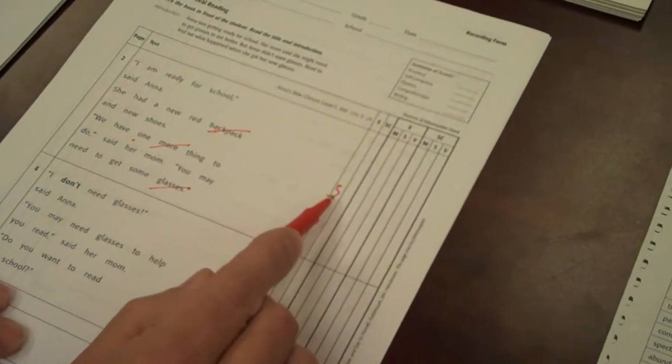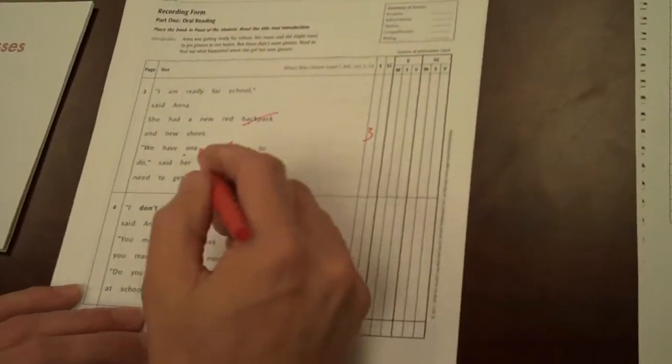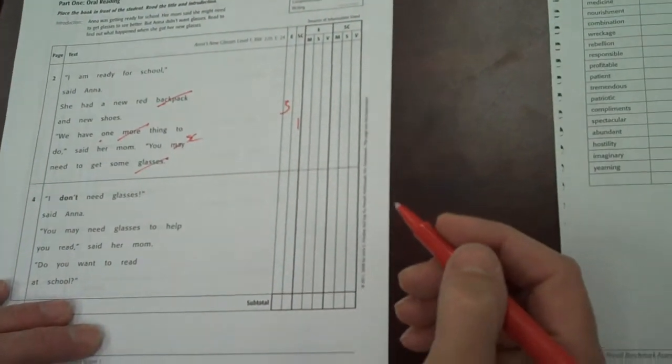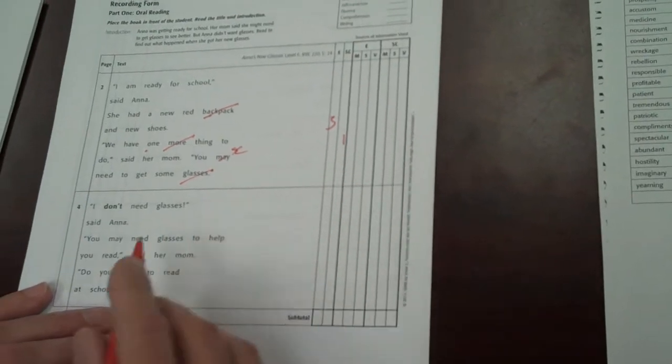So if you have just a basic record, we have three errors here. Now if they had a self-correct, you might mark and then go self-correct and you'd mark that there. It doesn't count as an error for our levels though.